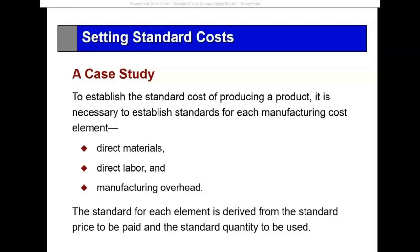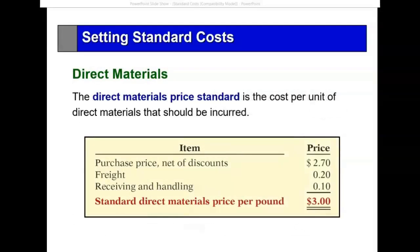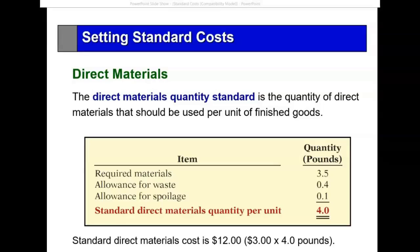Let's work through a case study. We're going to establish the standard cost of producing one product. The standard inputs for direct material, direct labor, and manufacturing overhead are what we're talking about. For direct material, the price standard is the amount that we would pay for that direct material — for example, $2.70, but we're going to add freight and handling charges and use $3.00 as the price per pound for the material.